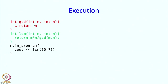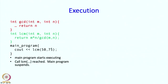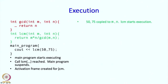So how does this execute? Execution begins with the main program. It encounters the LCM call, so the main program suspends and an activation frame is created for LCM. Then 50 and 75 are copied to M and N, and LCM starts execution. As LCM executes, it encounters a call to GCD.